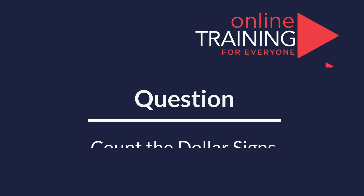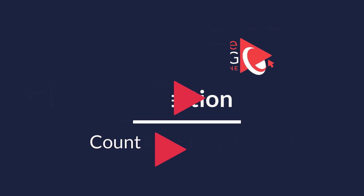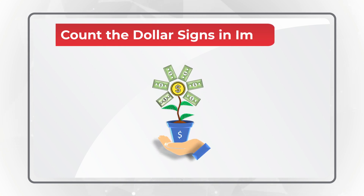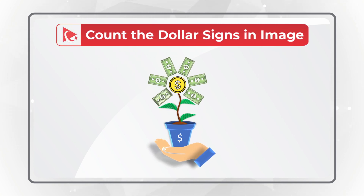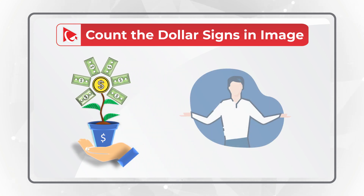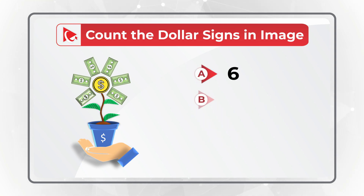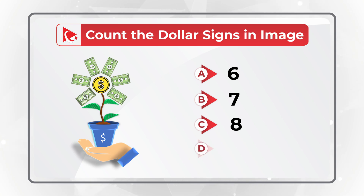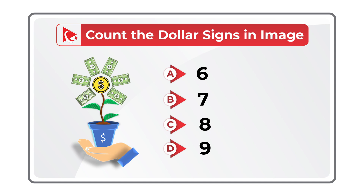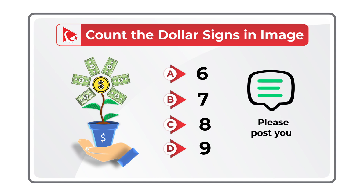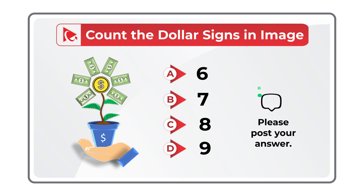Here's a practice question — please calculate the answer and post it in the comments so I can give you feedback. You need to count all dollar signs in the image. You have four choices: A = 6, B = 7, C = 8, D = 9. Pause the video to find the correct solution, then post your answer in the comments.